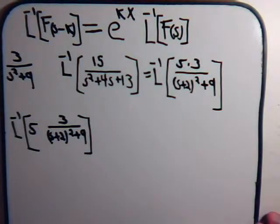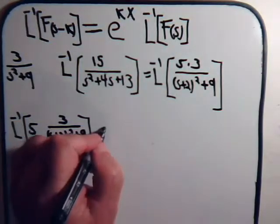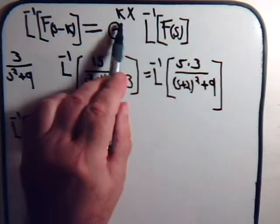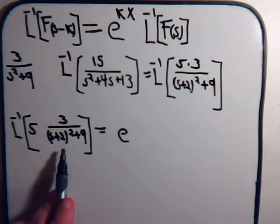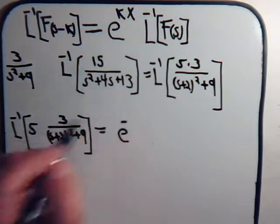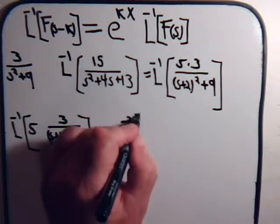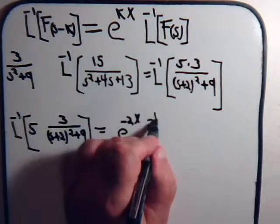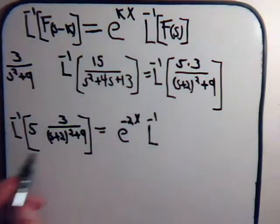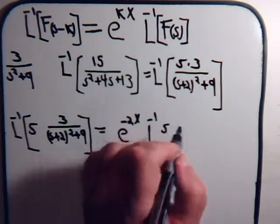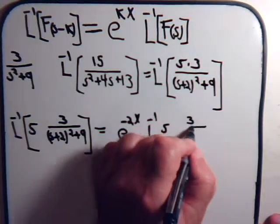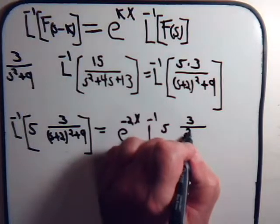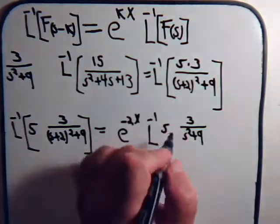So using our relationship here, we can say well this would be equal to e to the minus k. This is minus k, this is plus k, this is plus, and this is minus 2 up here, times the inverse Laplace transform that stays the same, 5 over 3 of just f of s, which is s squared plus 9.